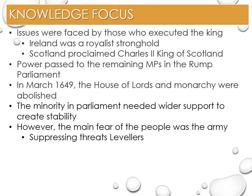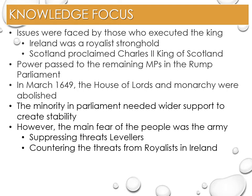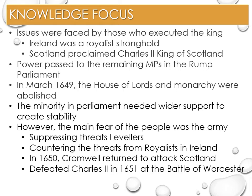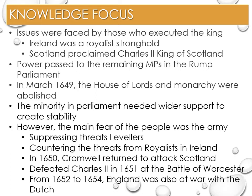This need can be seen by the role the army played. Firstly, the suppressing of threats from a level of mutiny at Burford in May 1649, where the ringleaders were shot. Countering the threats from royalists in Ireland, Cromwell landed in Ireland in 1649 and stormed the strongholds of Drogheda and Wexford, slaughtering thousands of defenders and civilians after they had surrendered. In 1650, Cromwell returned at the head of the army to attack Scotland, defeating the Scots first at Dunbar in 1650, and when Charles II led an attack in 1651, defeating them at the Battle of Worcester in September, where the young Charles hid in an oak tree. From 1652 to 1654, England was also at war with the Dutch in the first Anglo-Dutch War over trading rights.